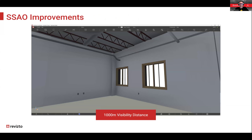Next are some graphic improvements. The first is SSAO — screen space ambient occlusion — which measures the extent to which a surface is obscured from surrounding light sources, creating small shadows in your view. SSAO has been in Revisto for a while, but there's been an improvement in how it appears in 3D views. The lower you have your camera visibility distance set in preferences, the better it will display.